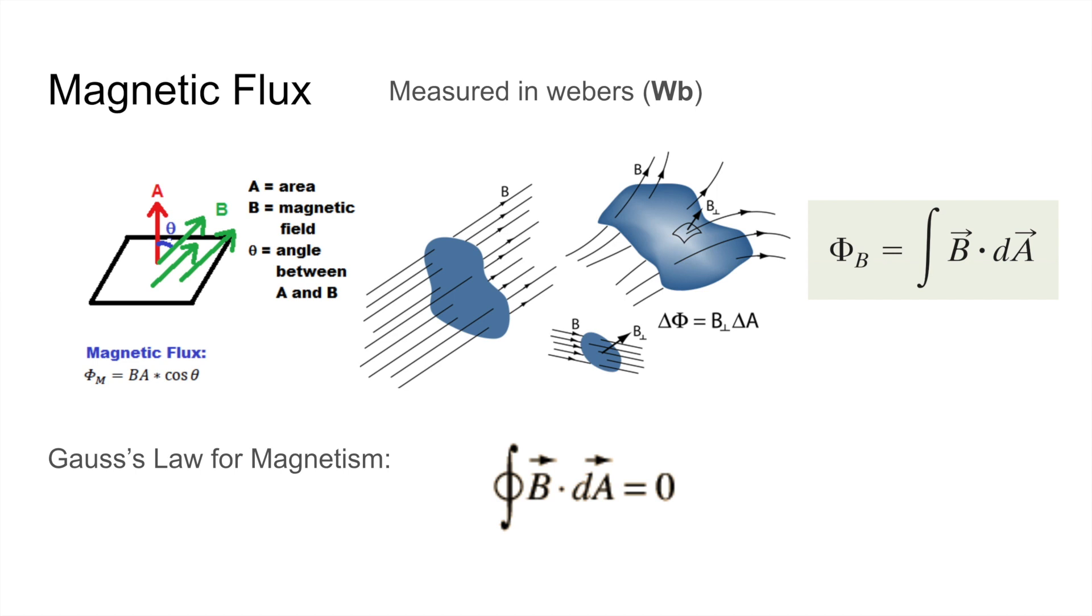the magnetic flux is given by B times A times cosine theta, where A is the area of the surface in question, B is the magnitude of the magnetic field, and theta is the angle between the normal vector of the area and the magnetic field.